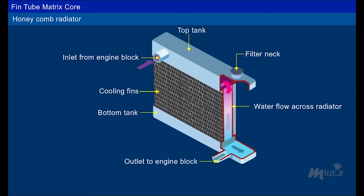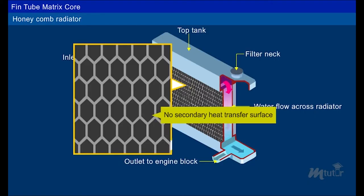Earlier, they used honeycomb radiator. It had a large number of circular tubes arranged in a hexagonal shape. In this type of radiator, heat transfer efficiency was very poor due to absence of any secondary heat transfer surface. Hence, this type is no longer produced or used.